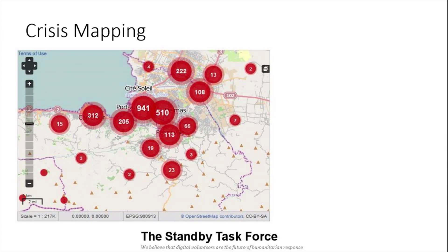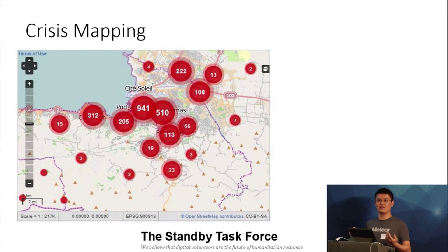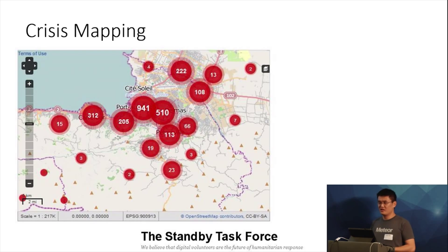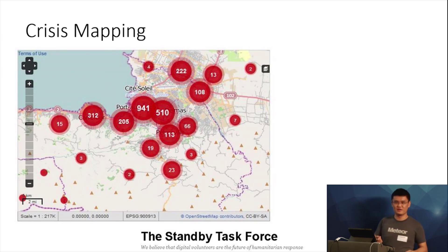The problem I'm looking at more specifically is crisis mapping. For example, this is a crisis map of the earthquake that hit Haiti in 2010. When a natural disaster like this happens, people basically lose a lot of access to information, but a few things such as Twitter reports and SMS messages get out. Volunteers in other countries with online access basically get together and create a map of the damage caused by the earthquake, which is useful for organizations like the UN to respond to these disasters.